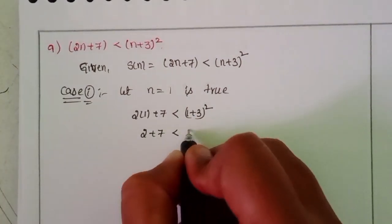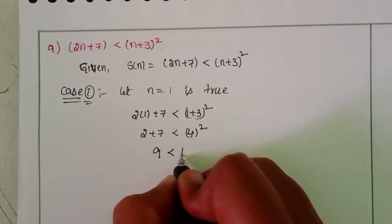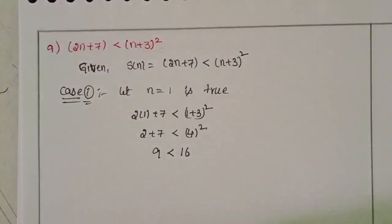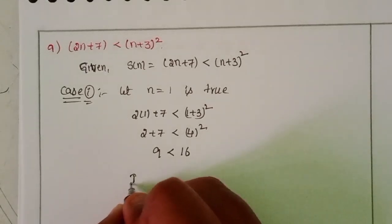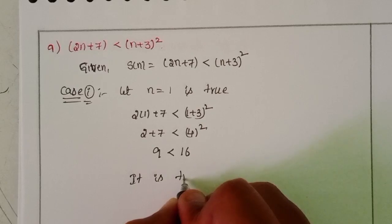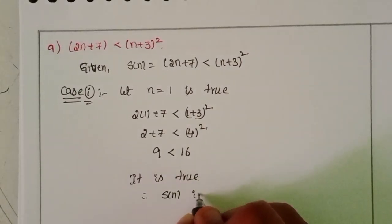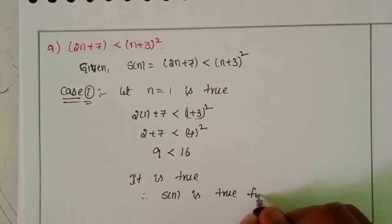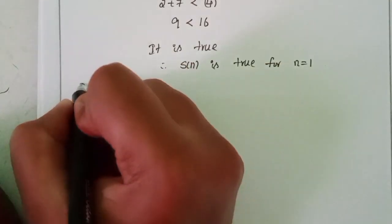2 plus 7 is less than 4 square. 9 is less than 16. Yes, is this correct or not? Exactly, 100% correct. So it is true. Therefore S(n) is true for n equal to 1.